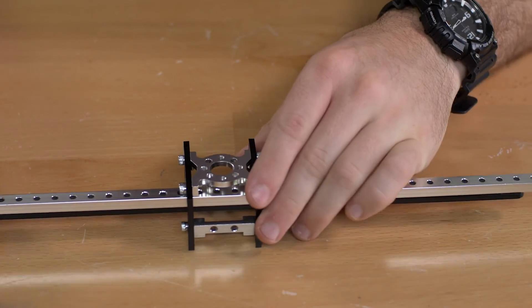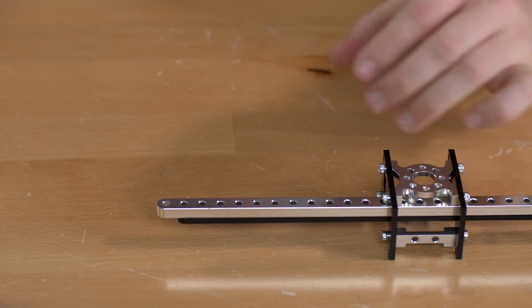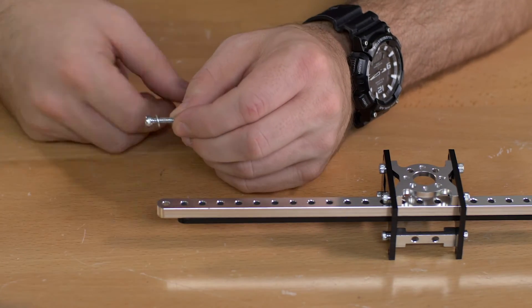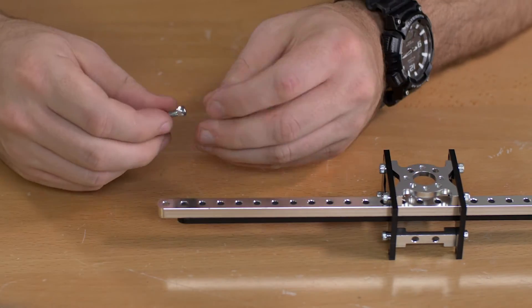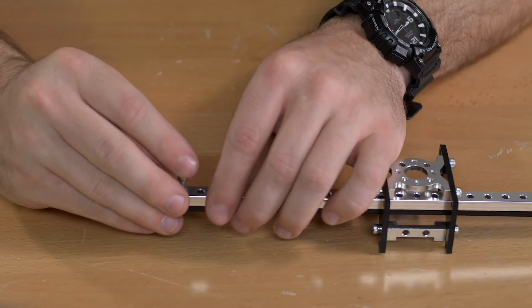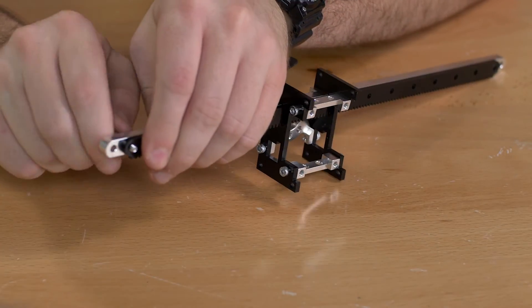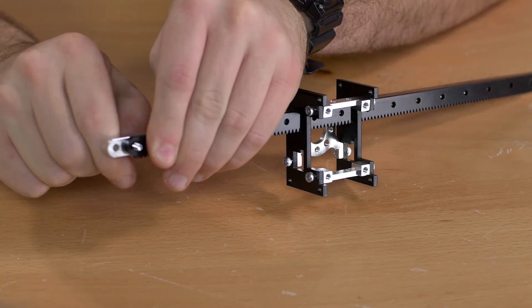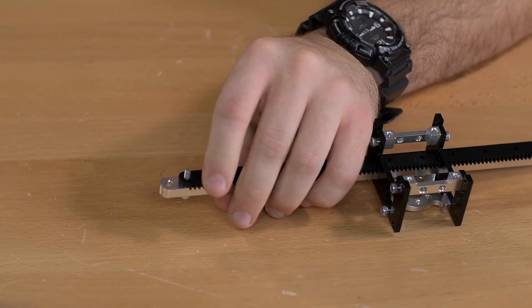And we're going to connect those two using a 5/8 inch socket head screw and a number 6 washer. And on the other side we're going to connect them using a lock nut.